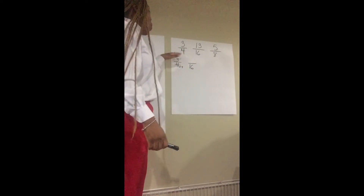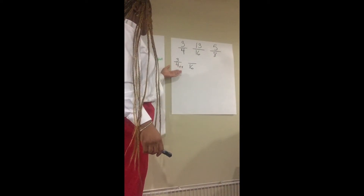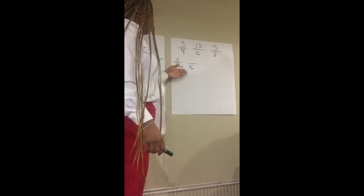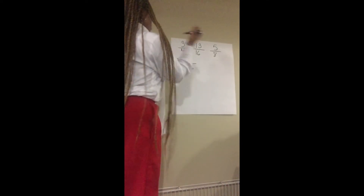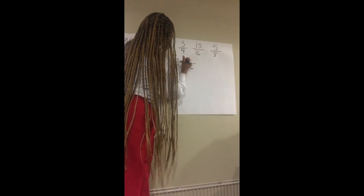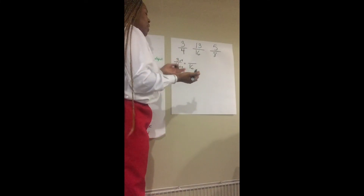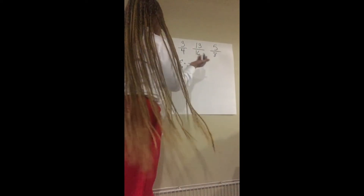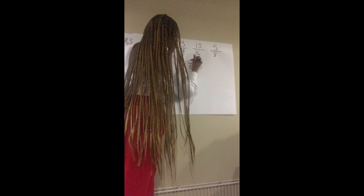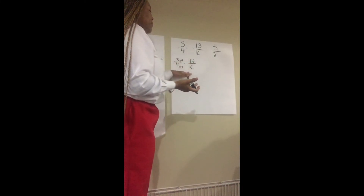Four times four gives us sixteen. So whatever we do to the denominator, we always do to the numerator. Since we multiply the denominator by four, we have to multiply our numerator by four as well. So now I'm going to multiply our three at the top by four. Three times four is twelve. So now we have our new equivalent fraction of twelve sixteenths.